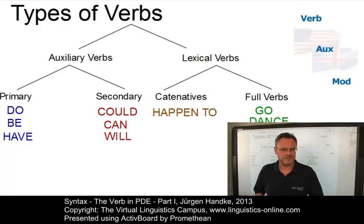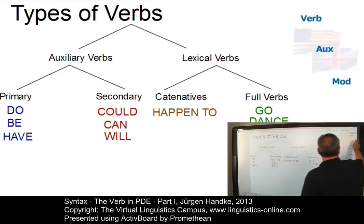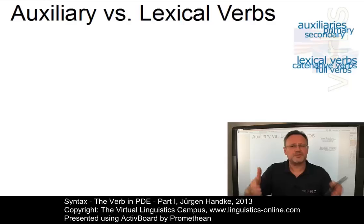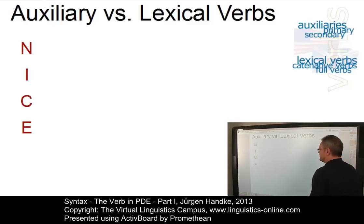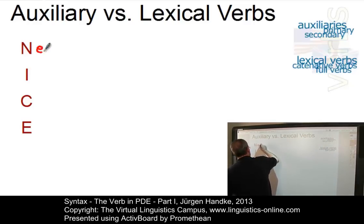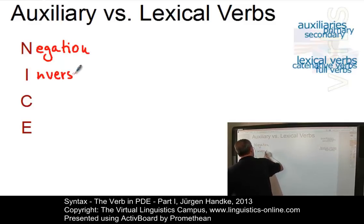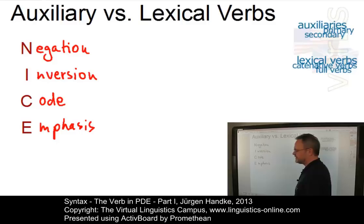The most central distinction can be drawn between auxiliary verbs on the one hand and lexical verbs on the other. There is a set of criteria that help us to distinguish these two central types. These criteria can best be remembered as the NICE criteria, because the initial letters N-I-C-E make up this word. The initial letters stand for particular syntactic contexts: negation (N), inversion (I), code or coding (C), and emphasis (E).